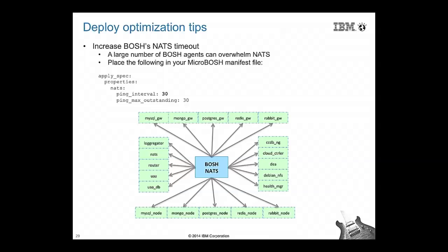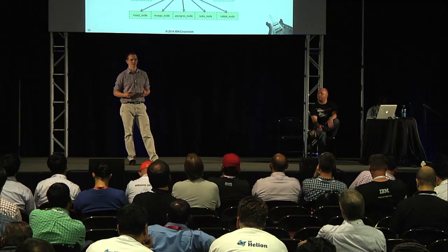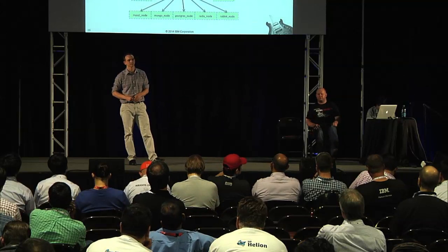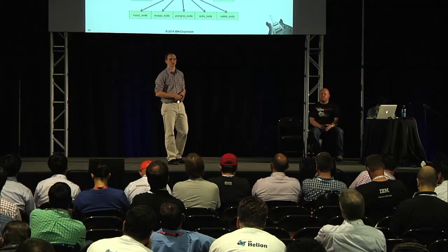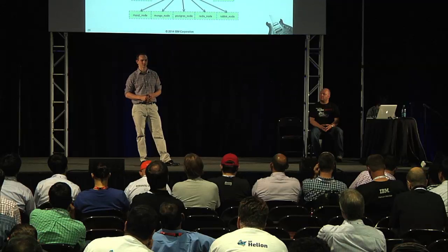Another optimization bottleneck is Bosh itself. As Cloud Foundry VMs come up, an agent in the stemcell communicates using a message bus inside Bosh called NATS. Originally NATS was only a single node, which gets overwhelmed with 60-plus VMs all communicating through it. To allow more lag, we increased the NATS ping timeout to 30. With the latest Cloud Foundry version 169, they now have the ability to cluster NATS, so hopefully this workaround won't be needed.